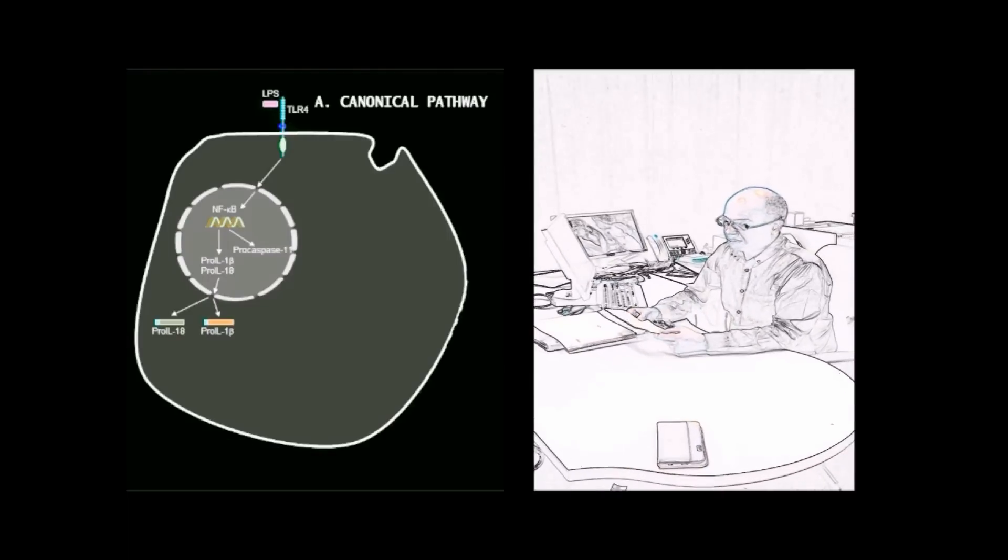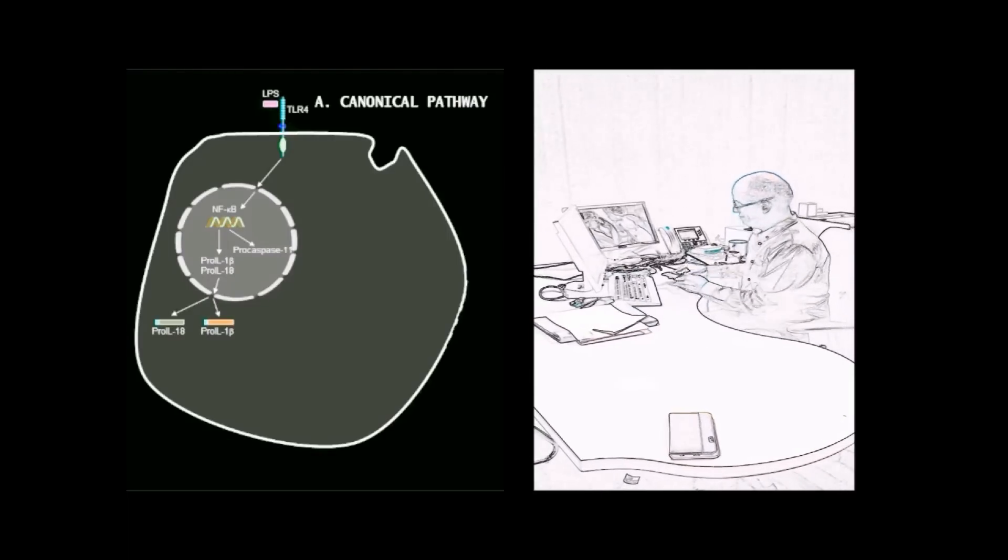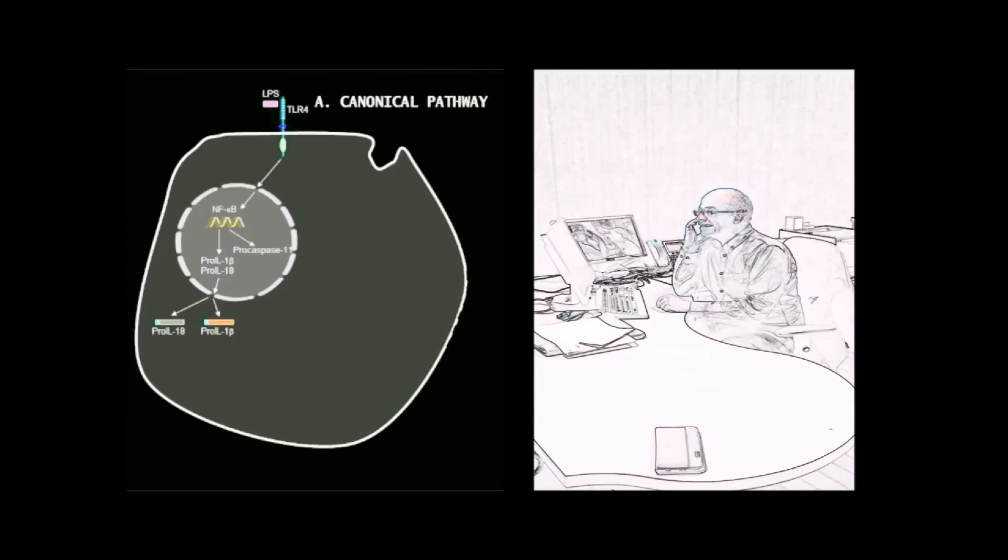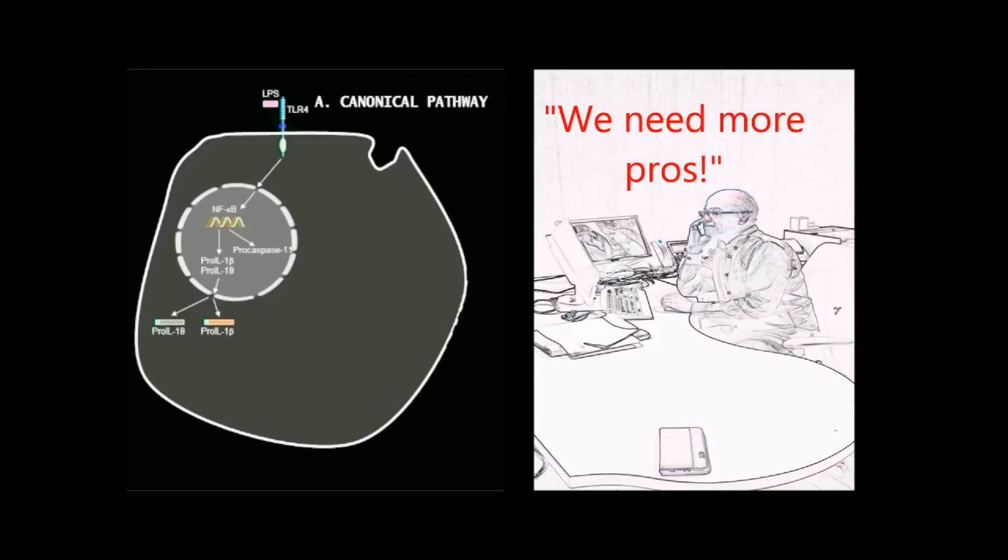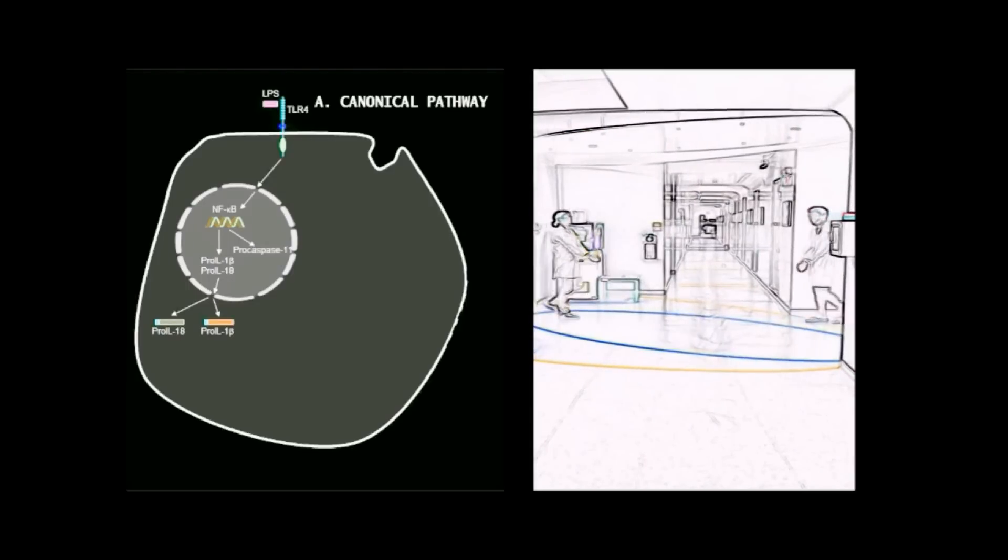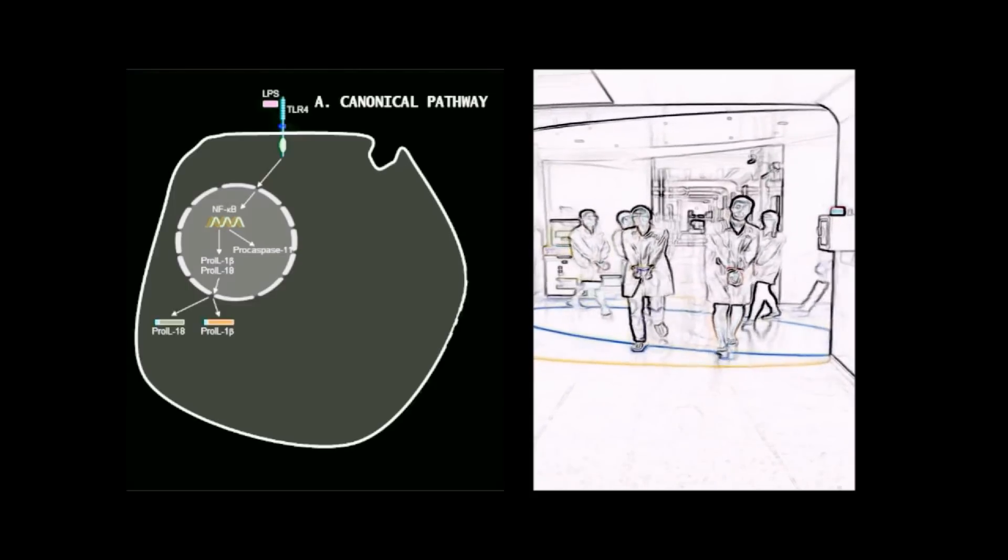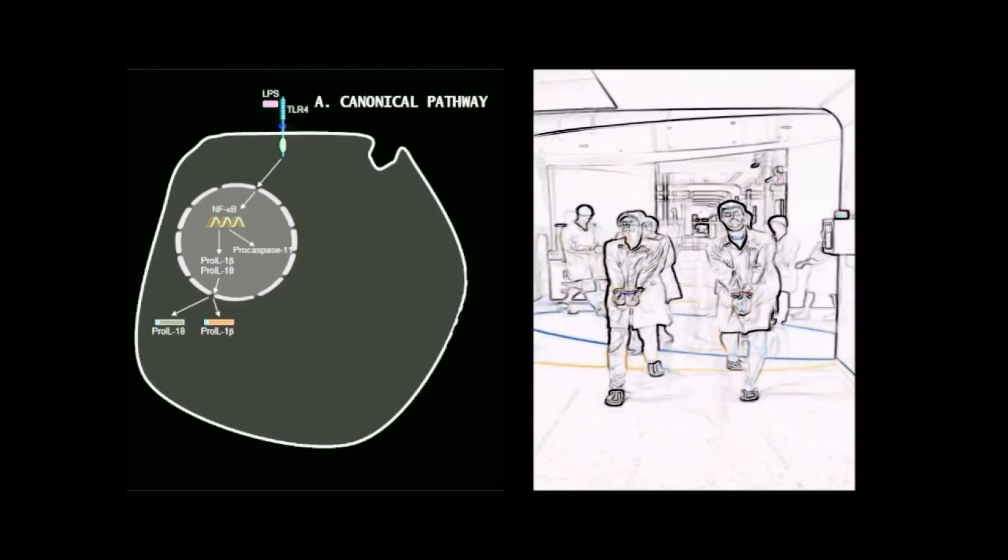NF-κB or IRF-3 becomes activated and switches on the transcription machinery to increase the expression of pro-caspase-1 and pro-caspase-11 and pro-inflammatory genes IL-1-β and IL-18. These cytokines are produced as inactive precursors, so they must be cleaved to perform their biological functions.